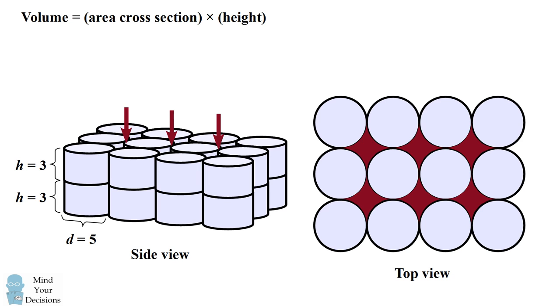The total height of the chocolate will therefore be 6, so the volume is equal to the area of a single cross-section times 6.